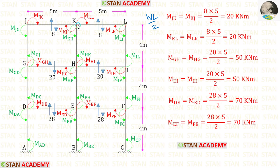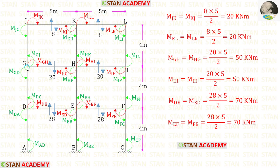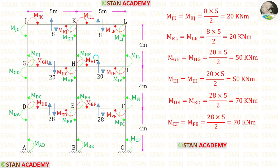Now let us take member KL. Here W is 20 and L is 5, so for MKL and MLK we are also getting 50. Now let us take member GH. Here W is 20 and L is 5, so for MGH and MHG we are getting 50. In the similar way, we can find MHI, MIH, MDE, MED, MEF, and MFE.